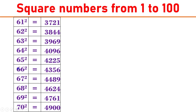66 square equals 4356. 67 square equals 4489. 68 square equals 4624. 69 square equals 4761. 70 square equals 4900.